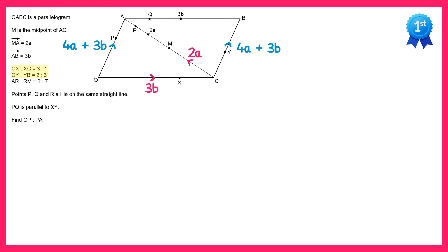Next we're given some ratio information, specifically about the points X and Y. We're going to use this information to find the vector from X to Y. To get from X to Y, first we'll find vector XC and then vector CY. The first ratio is 3 to 1, meaning point X must be 3 quarters of the way along the line from O to C. So vector XC must be 1 quarter of vector OC — let's replace XC with 1 quarter of OC.